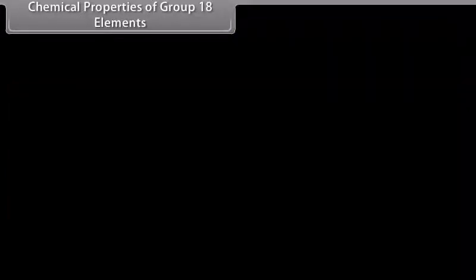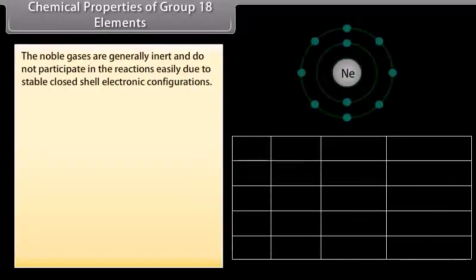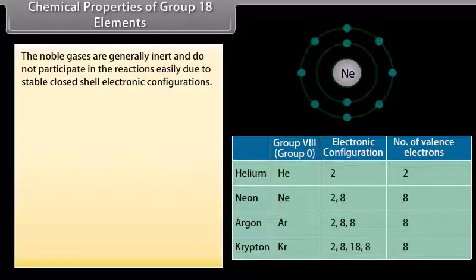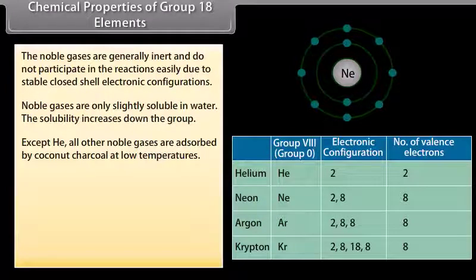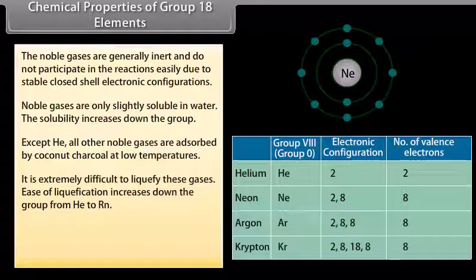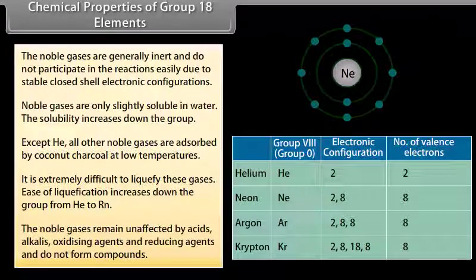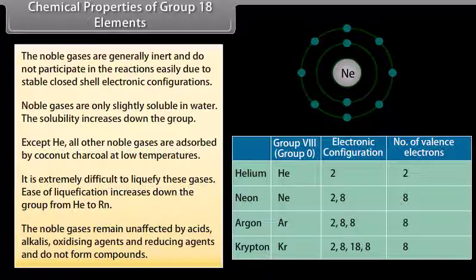Chemical properties of group 18 elements: Noble gases are generally inert and do not participate in reactions easily due to stable closed-shell electronic configurations. They are only slightly soluble in water; solubility increases down the group. Except helium, all other noble gases are absorbed by coconut charcoal at low temperatures. They are extremely difficult to liquefy, though ease of liquefaction increases down the group from helium to radon. Noble gases remain unaffected by acids, alkalies, oxidizing agents and reducing agents, and do not form compounds.